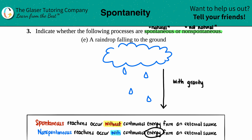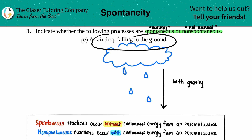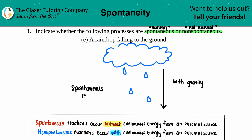Gravity is a natural acceleration — anytime you let go of something, whether it's a pen, a pencil, or a rock, it always falls to the ground. That's the natural condition. So a raindrop falling from the sky is natural because it goes with gravity, which is the natural acceleration on Earth. Since this is natural, this would be a spontaneous reaction, and there is no outside energy needed to make rain happen.